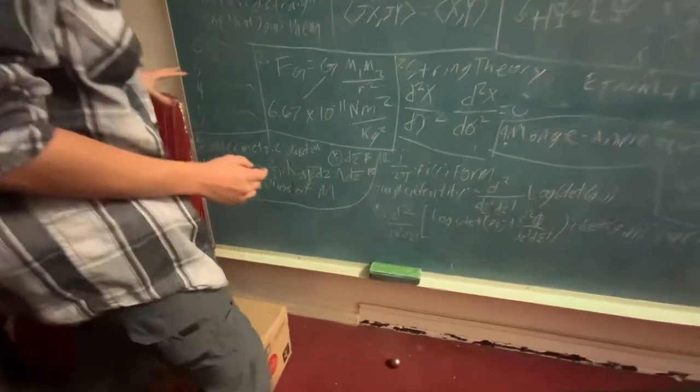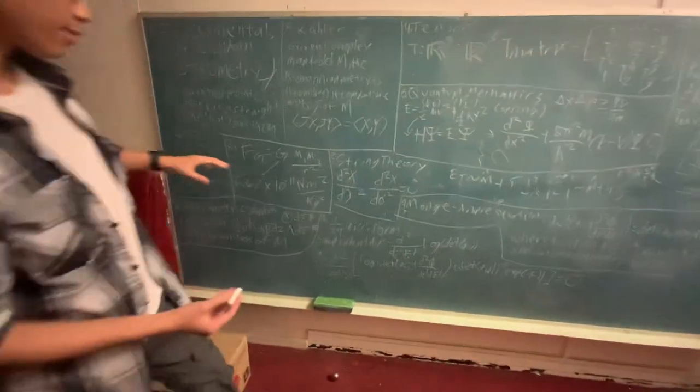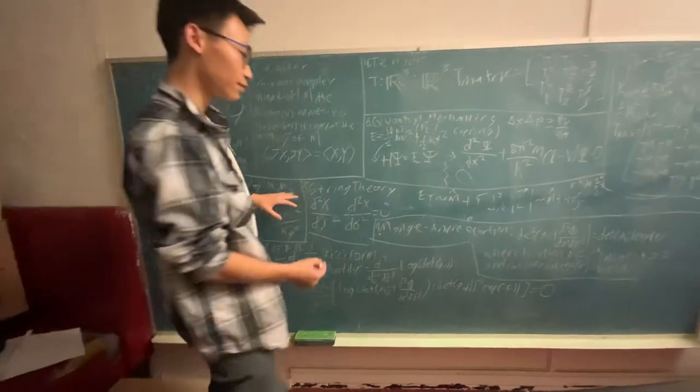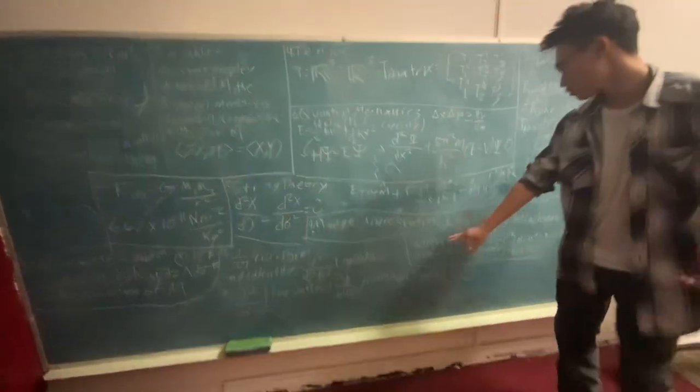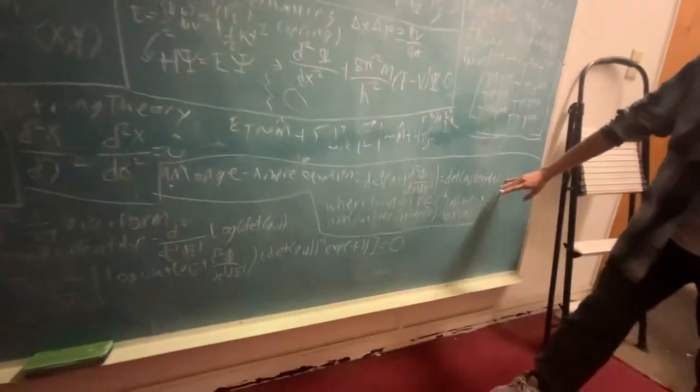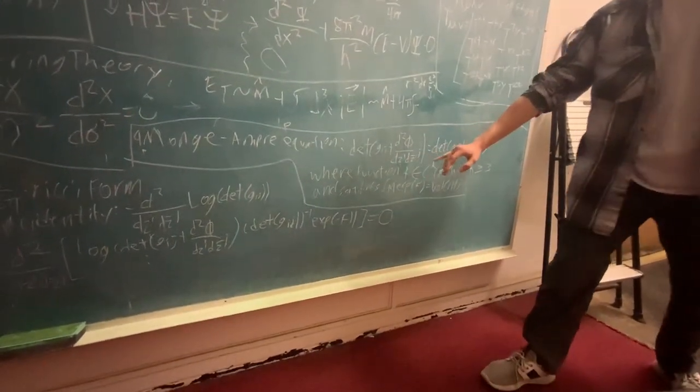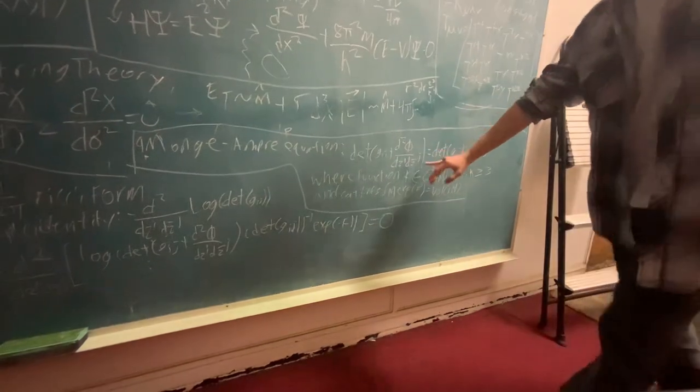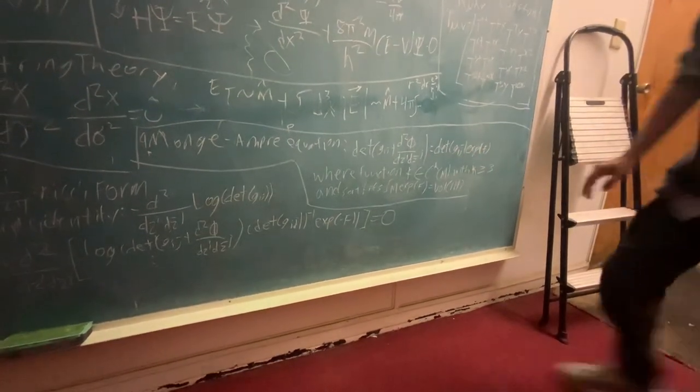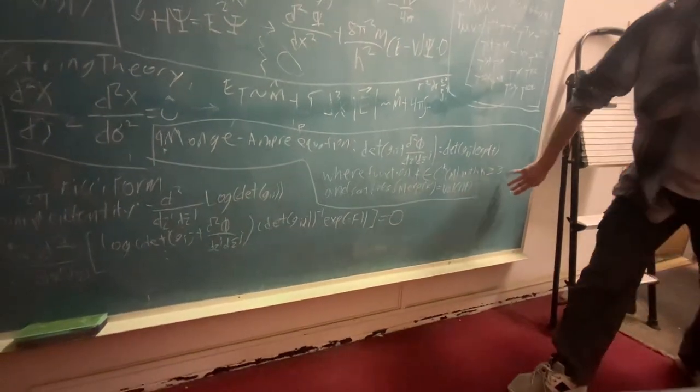The energy of string theory through this manifold is given by the Monge-Ampere equation given here, which is the derivative of phi with respect to dzi dz bar to the j, where it fulfills these stipulations.